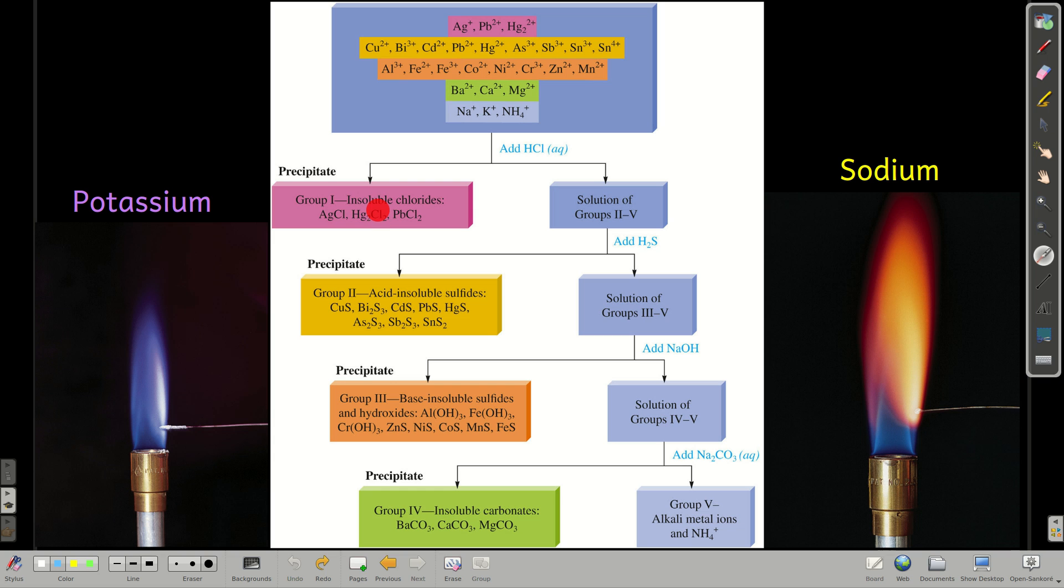So we've separated group one with hydrochloric acid, group two, the insoluble sulfides with hydrogen sulfide, group three, we added sodium hydroxide and got the base insoluble sulfides and hydroxides to precipitate out, then we added carbonate, sodium carbonate to get the insoluble carbonates and we had left the alkaline metal ions and ammonium in solution.